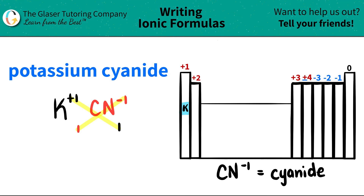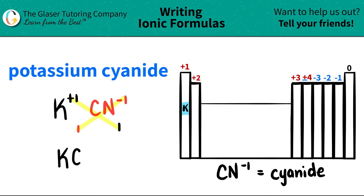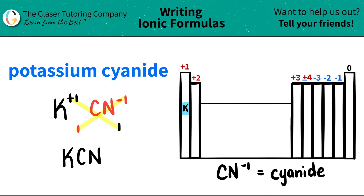So now let's just start naming. I have potassium — I have one of them. If you have one of something, you don't need to write it, so you don't have to write the one here. And the same thing for the CN — I'll just write CN, I don't have to write one. And that's it. So potassium cyanide is KCN.